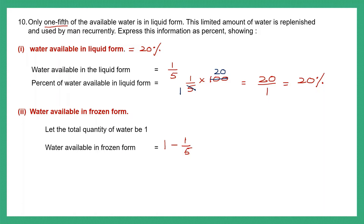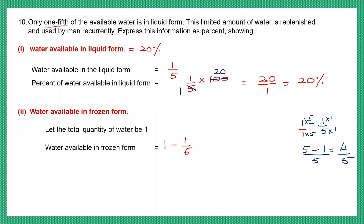So let's do this subtraction: 1 minus 1 by 5. This is a subtraction of fractions, so let's give 1 the denominator 1. The LCM will be 5. So 1 becomes 5 by 5, and 5 minus 1 is 4 by 5. So the water that is available in the frozen form is 4 by 5.